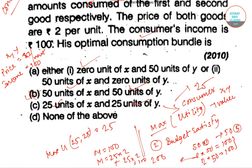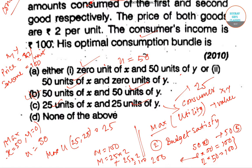If we take the first option with x = 50 and y = 0, then the maximum value is max(50, 0) = 50, so our utility is 50. Similarly, 0 units of x and 50 units of y also gives utility of 50. Both satisfy the budget constraint. So our first option is the best.